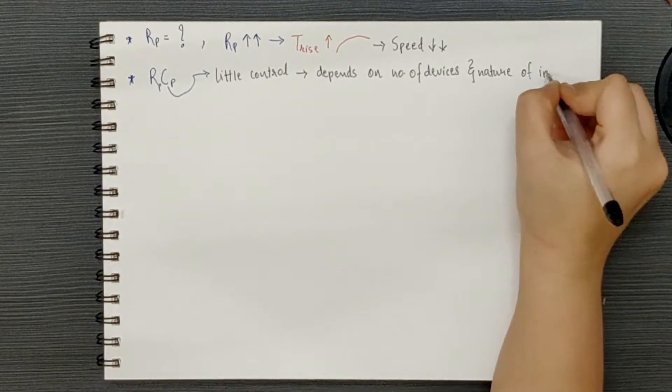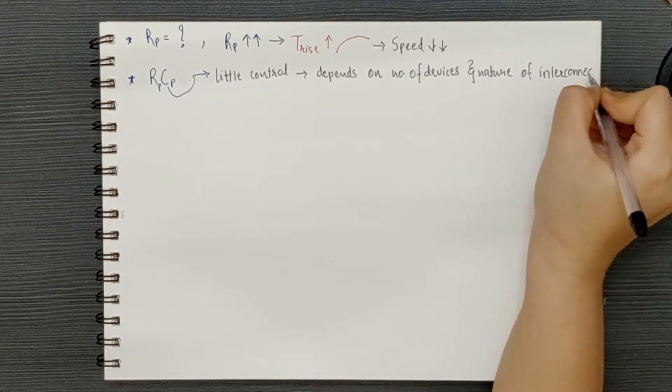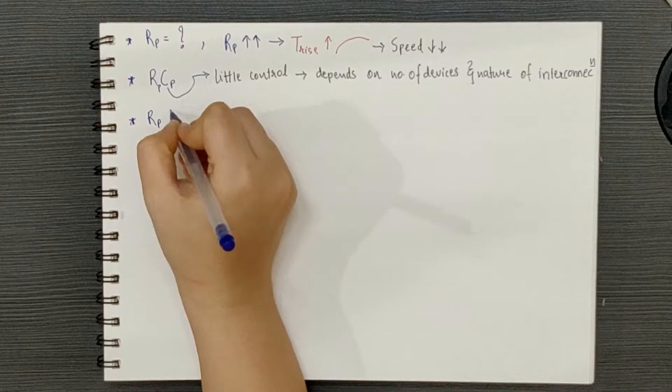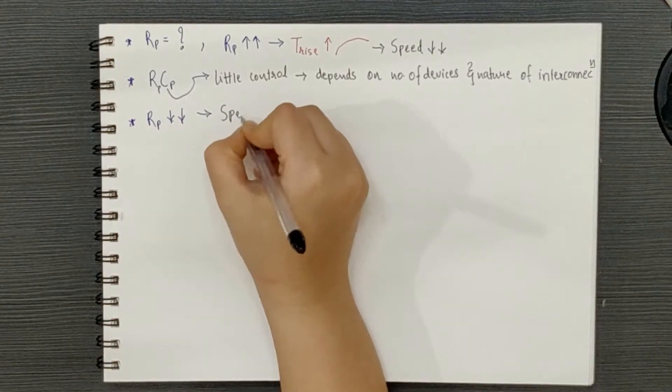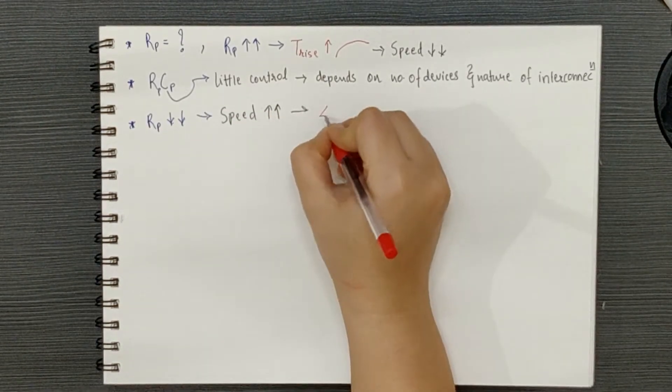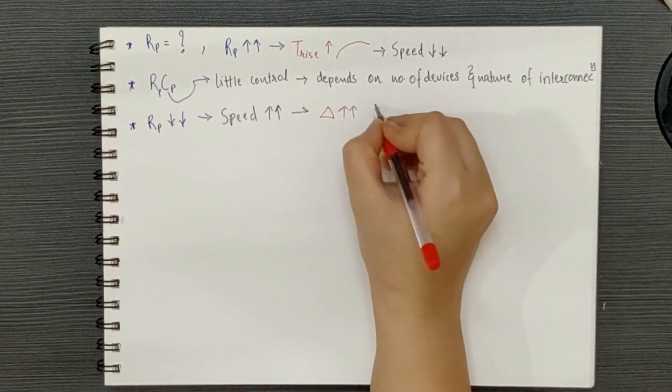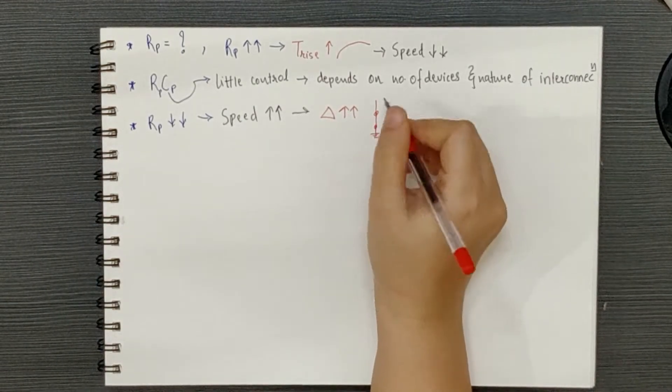Lower values of pull-up resistor result in a higher speed, but it will cause a large current to flow through the NMOS transistor which will lead to heat dissipation and this can ultimately damage the device.